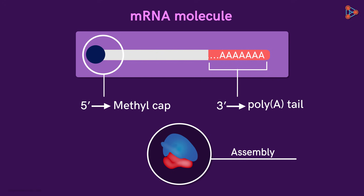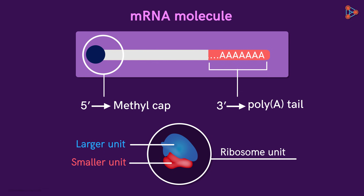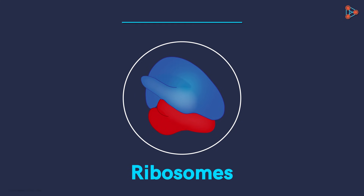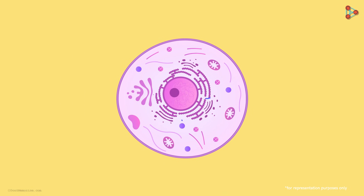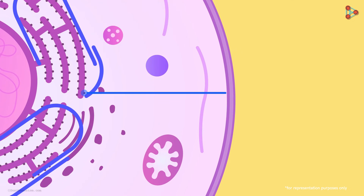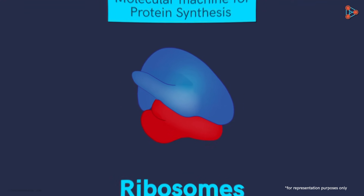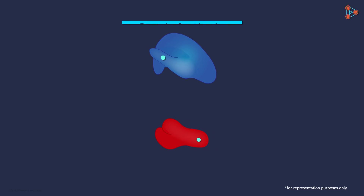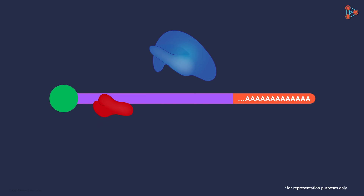Now, what exactly is this assembly we are referring to? That's the ribosome unit. Two units of ribosomes — one small and one large — form an assembly that helps in the process. Ribosomes are basically a complex assembly which acts like a molecular machine for protein synthesis. Remember the small dots attached to the surface of the rough endoplasmic reticulum that we find in the diagram of a typical cell? These are nothing but ribosomes. The smaller subunit binds to the mRNA at the initiation site, and once this is done, the larger subunit binds and completes the assembly.